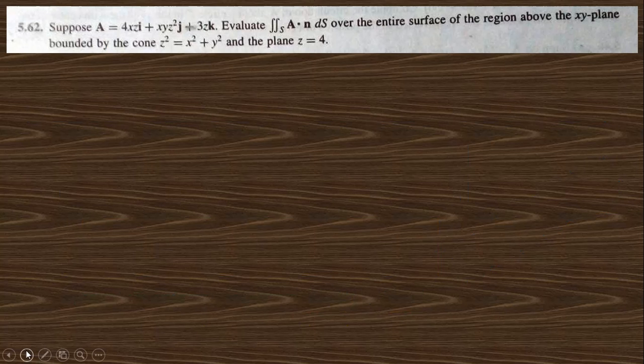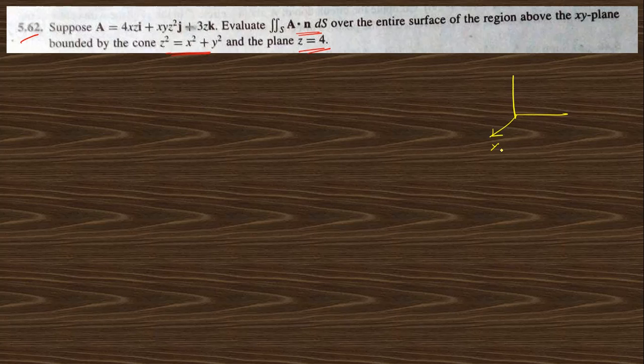Let's start with question number 5.62, which says: suppose a vector is given, find out the surface integral over the entire surface region above the xy-plane bounded by the cone z² = x² + y² and the plane z = 4. If you want to draw this cone, the x-axis, y-axis, and z-axis are shown, and the cone opens upward where z = 4 at the top. For that, you need to find the normal vector n-cap first.